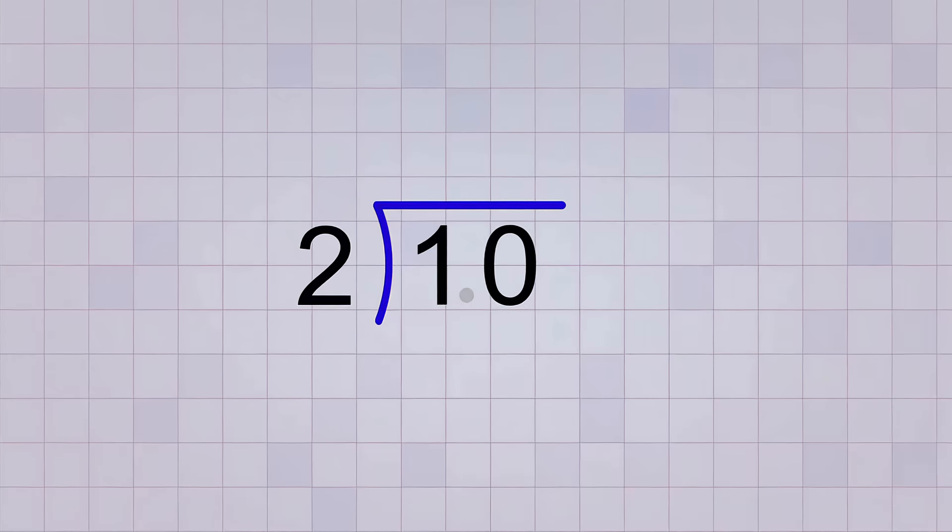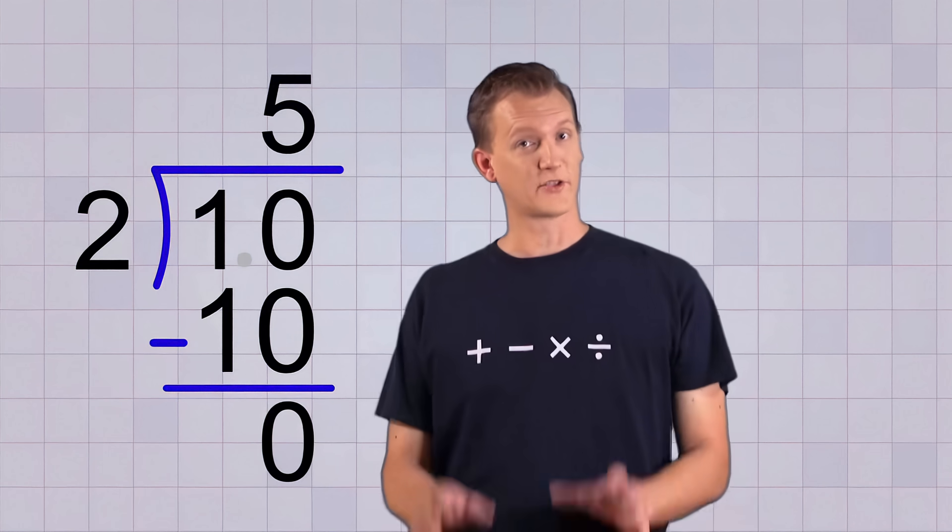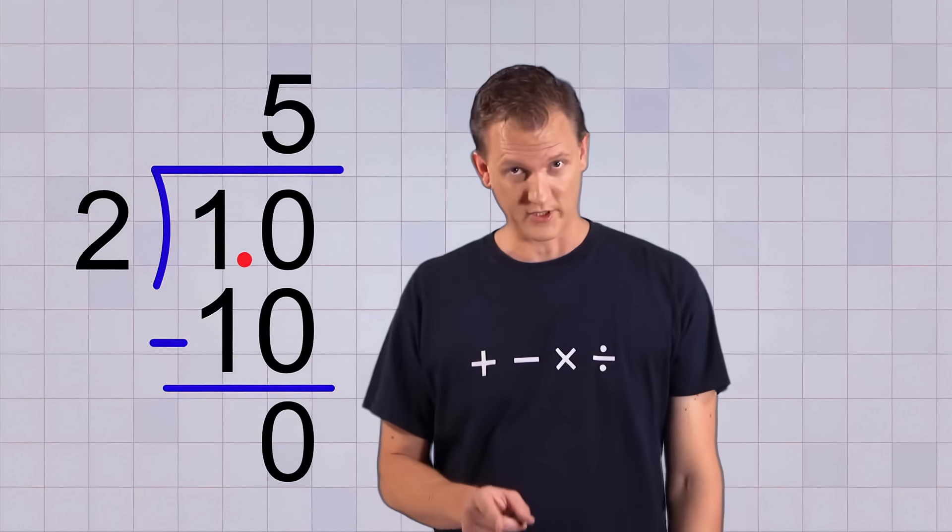Let's ignore the decimal point for a minute and pretend that our problem really is 10 divided by 2. So 2 will go into 10 5 times because 5 times 2 equals 10 and that leaves no remainder. So we're done, right? Not so fast. We've got that decimal point to deal with.